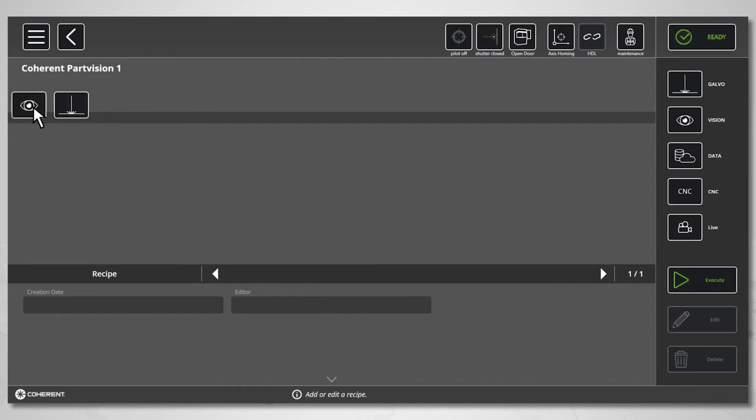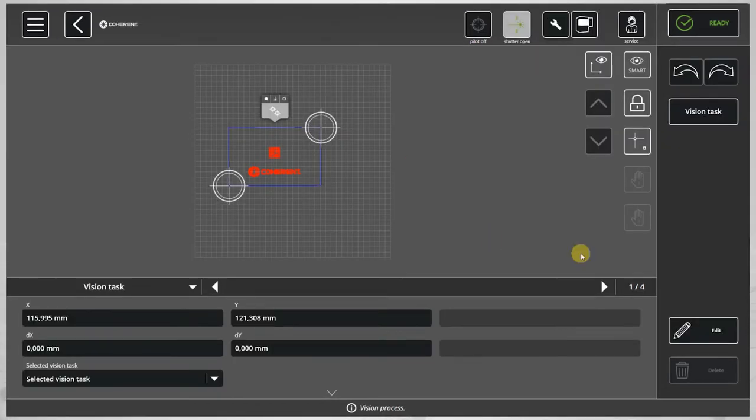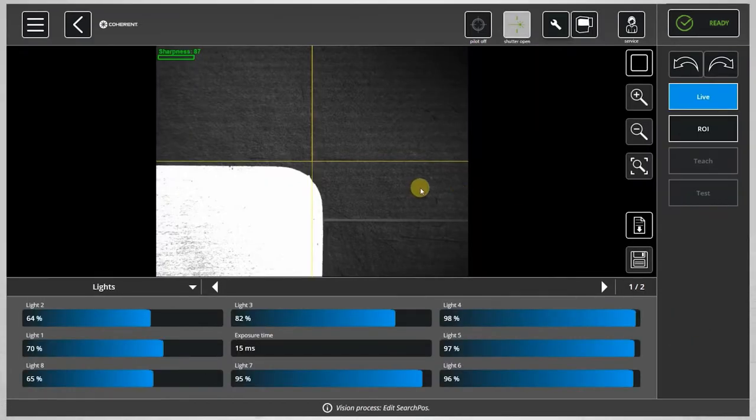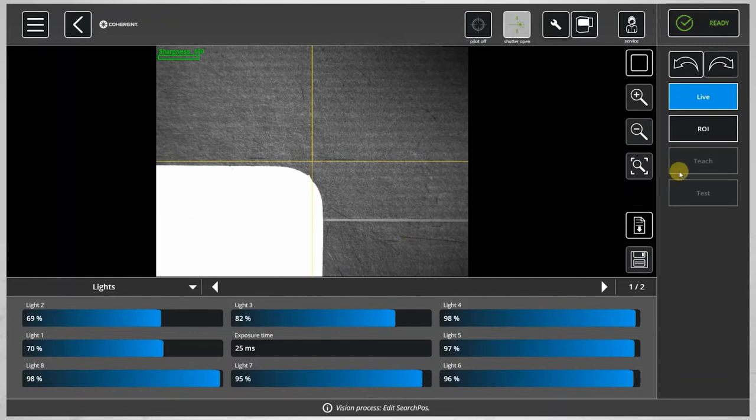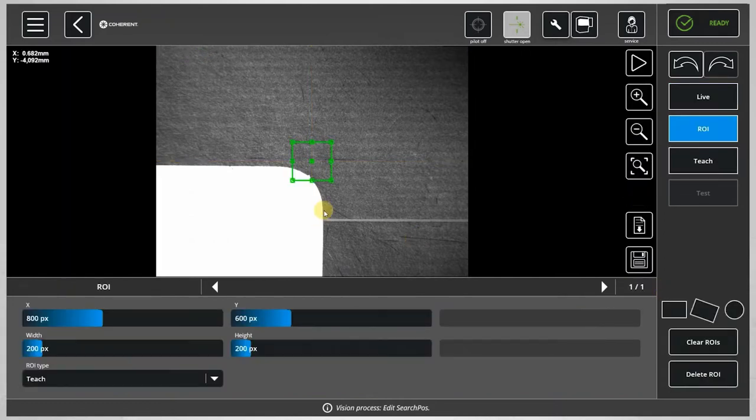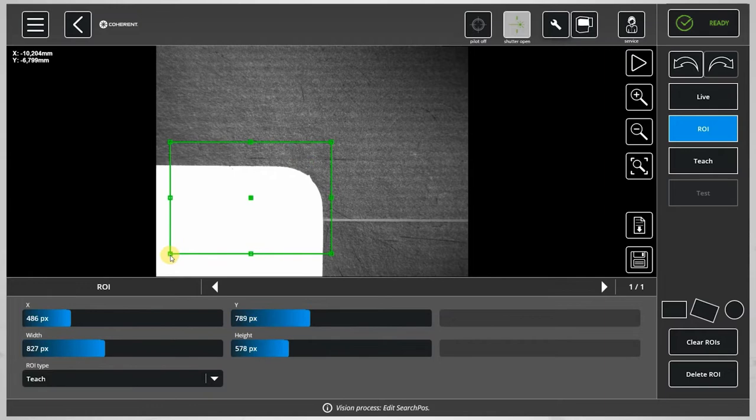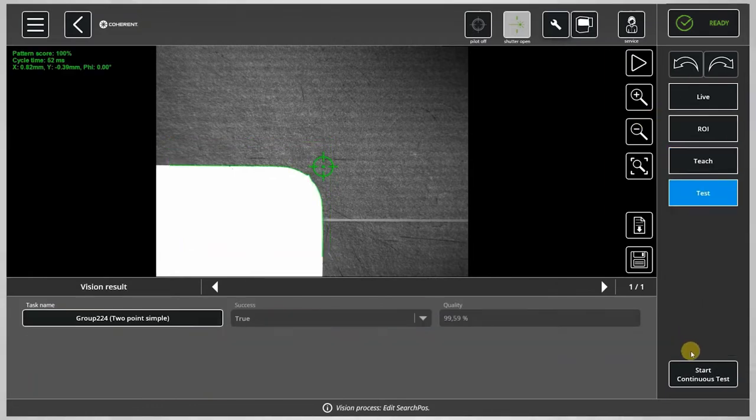So let's have a closer look at Part Vision in this marking process. You simply add a vision task to the process recipe, edit the search position, change light if necessary, select the region of interest however tiny it may be, then teach and test.